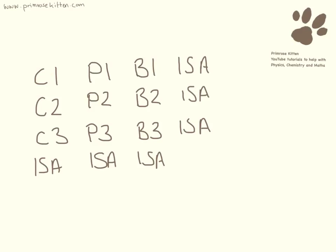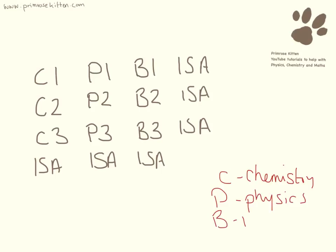So these are the codes here — we're talking about C1, P2 and B3. Simply put, C is for chemistry, P is for physics and B is for biology. The 1, 2 and 3 stands for the units that are going to be covered. And depending on what GCSEs you're actually doing, that is going to determine which units you're actually going to be taking.